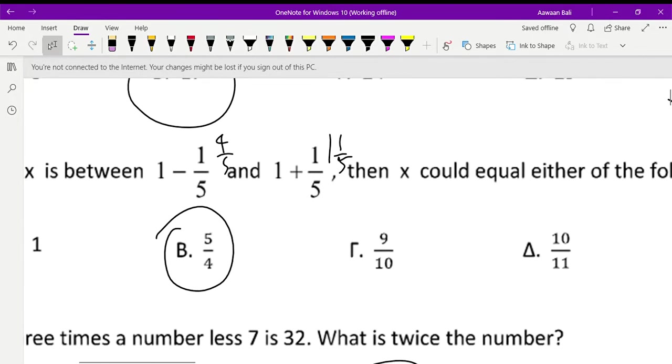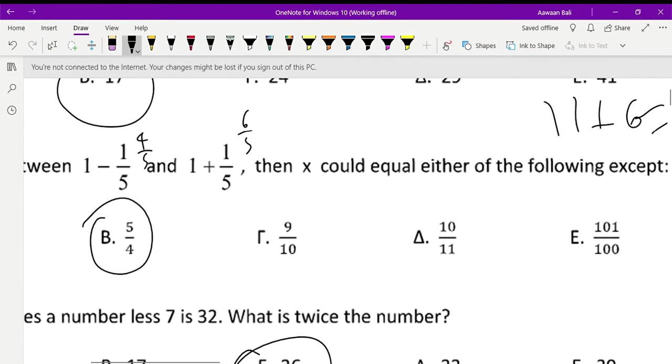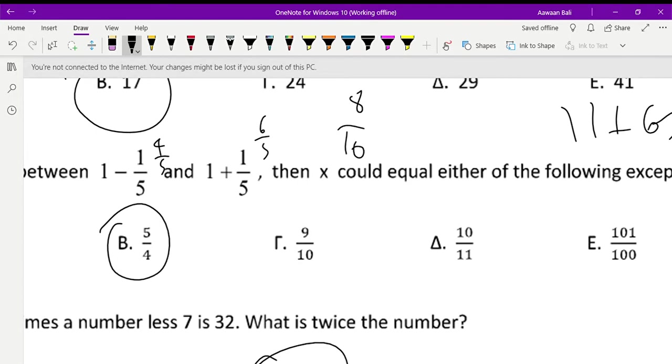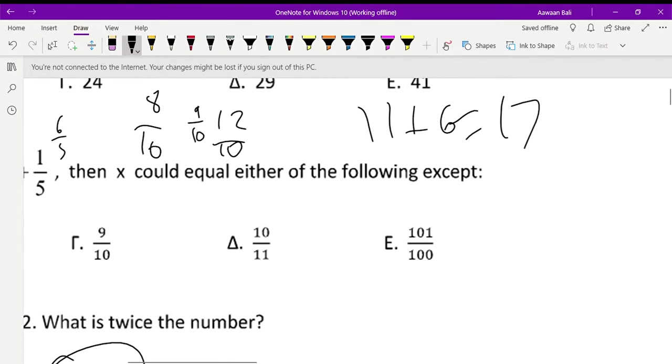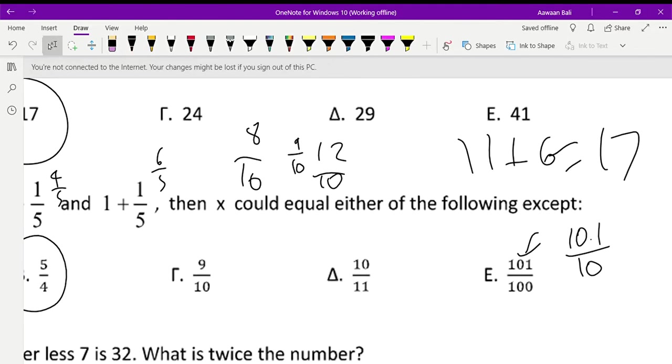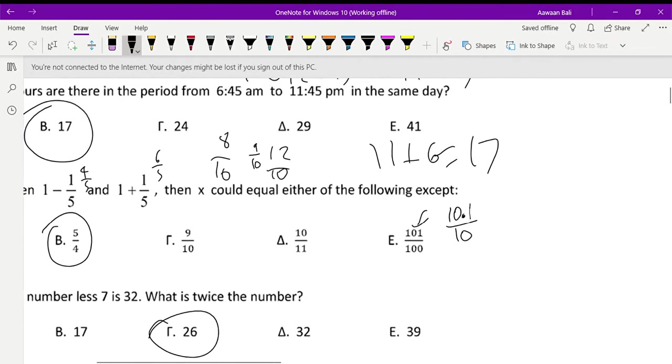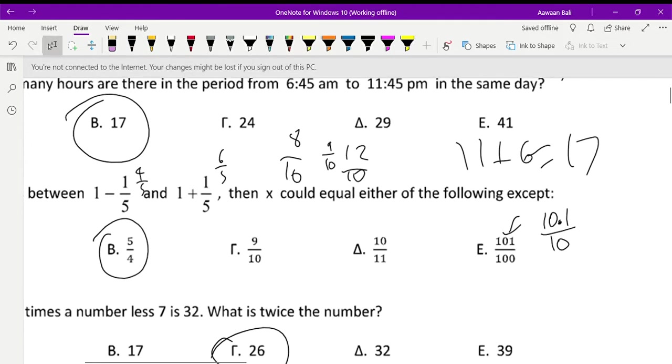If you take the LCM of 10, you would have 4 upon 5 as 8 upon 10, and 6 upon 5 as 12 upon 10. So 9 upon 10 would be in the middle, definitely. And when you're talking about 100, 101 upon 100, that's kind of 10.1 divided by 10. Since we know that 10.1 is between 8 and 12, we can say that E is correct.